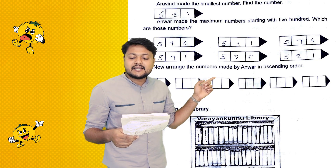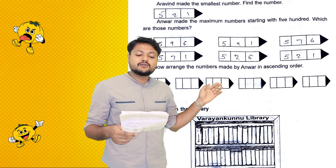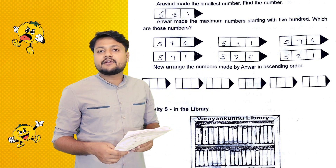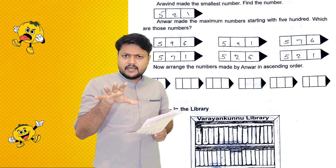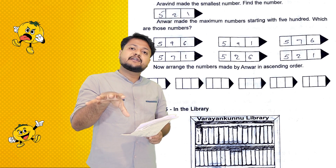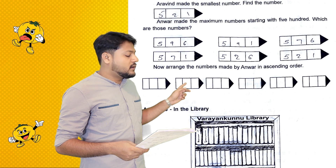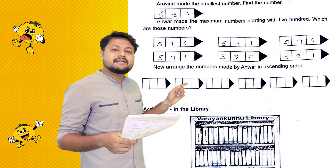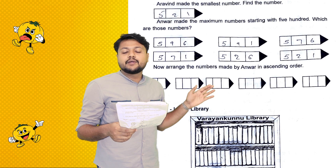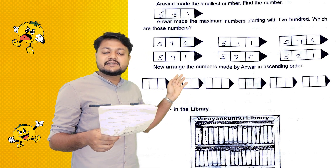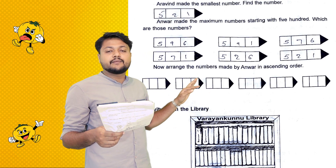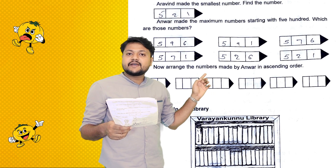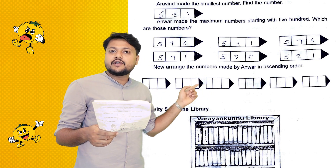Anwar made the maximum number starting with 500. The numbers starting with 500 are: 596, 591, 576, 571, 526, 521.